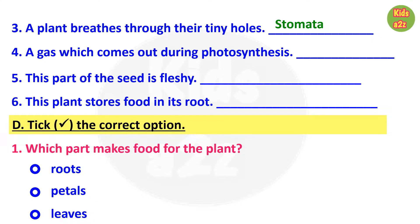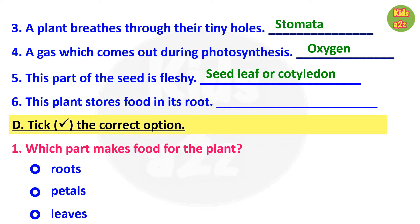Question four: a gas which comes out during photosynthesis — answer is oxygen. Number five: this part of the seed is fleshy — answer is seed leaf or cotyledon. Number six: this part stores food in its root — answer is radish.